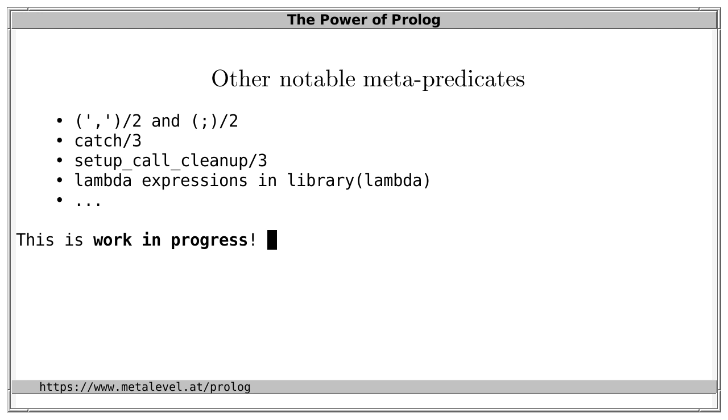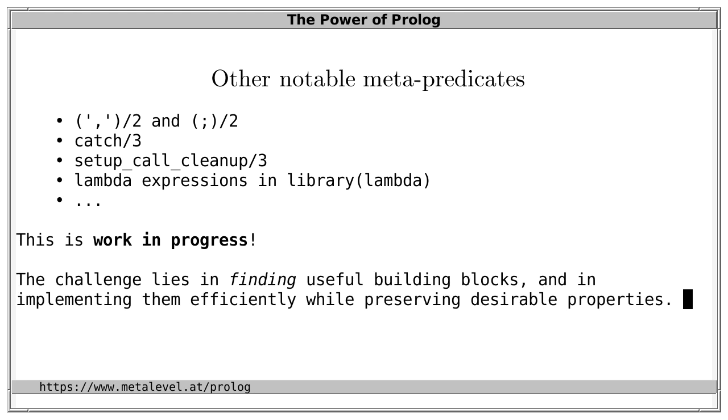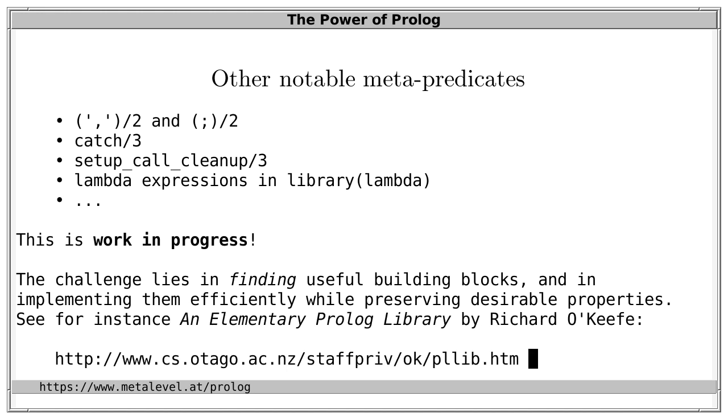Lambda expressions as provided by library lambda and several others. And there is one important point to consider when discussing these things. This is all work in progress. This means that in the future several other useful metapredicates may be found and may also become very relevant. So the challenge lies in finding such useful building blocks and in implementing them efficiently while preserving desirable properties. For example, for a very nice collection of useful metapredicates, see for instance the proposal An Elementary Prolog Library by Richard O'Keefe. And this proposal contains descriptions of many metapredicates which are often inspired by constructs from other languages such as APL and LISP.